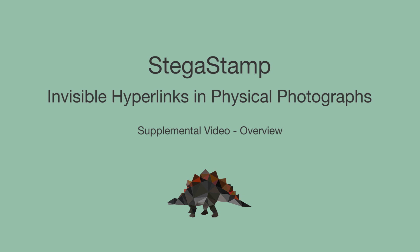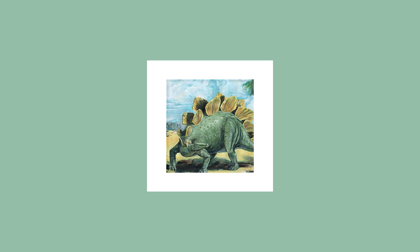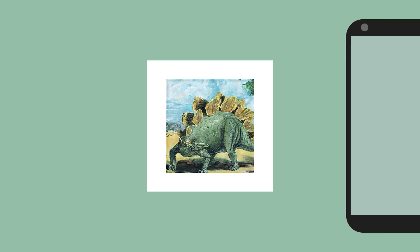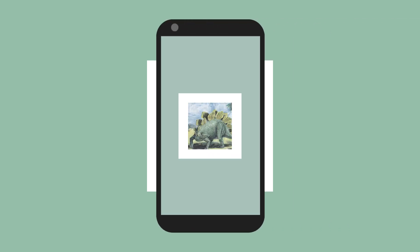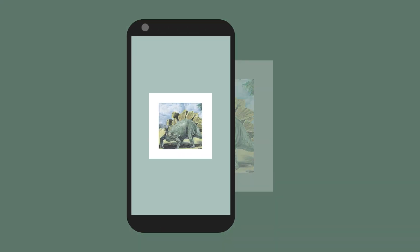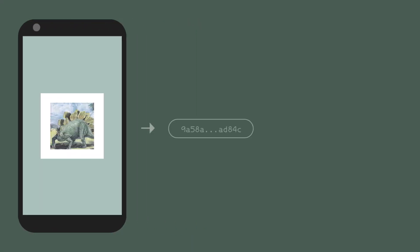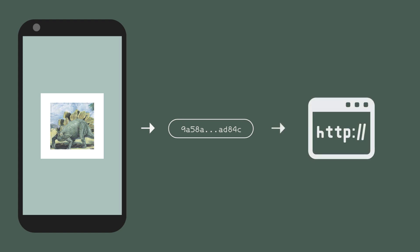StegaStamp: Invisible Hyperlinks in Physical Photographs. A StegaStamp is a modified image that, when captured with a camera, can be decoded into a message, which can act as a pointer to a URL in a manner similar to a URL shortener.